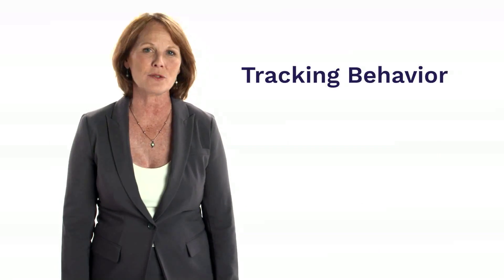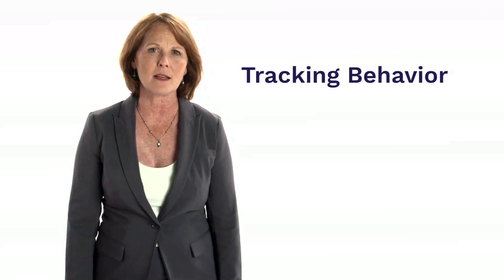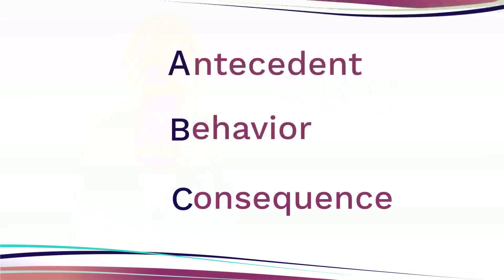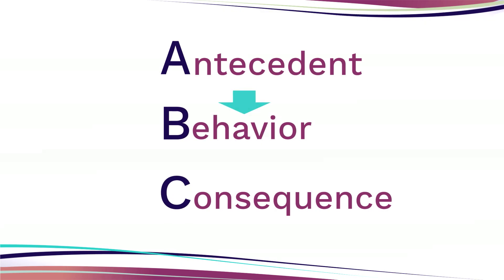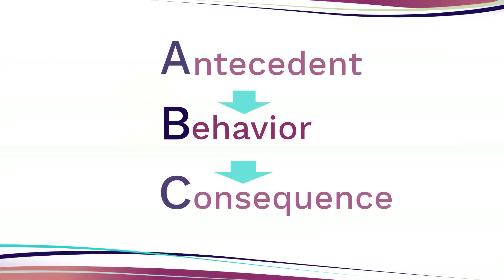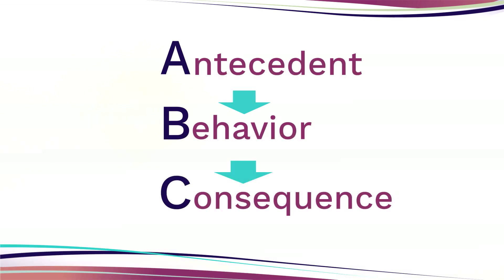Tracking helps us evaluate our children's progress, but does not provide much insight into why our children are behaving the way they are. There's another type of recording that helps us understand the possible motivations of children's behavior — ABC recording. The A stands for antecedent, or what happens before the behavior. The B stands for behavior, and the C stands for consequences, the results a child's behavior produces.